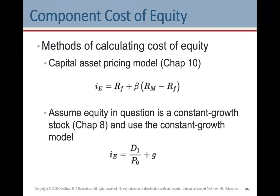To calculate the component cost of equity, there are a few different methods. The Capital Asset Pricing Model (CAPM) from chapter 10 gives: iE equals the risk-free rate plus beta times (the market rate minus the risk-free rate). The risk-free rate will be the T-bill rate for the US or Canada. The market rate will typically be given to you in questions. Beta can be calculated using the CAPM formula, or it will be given to you in questions.